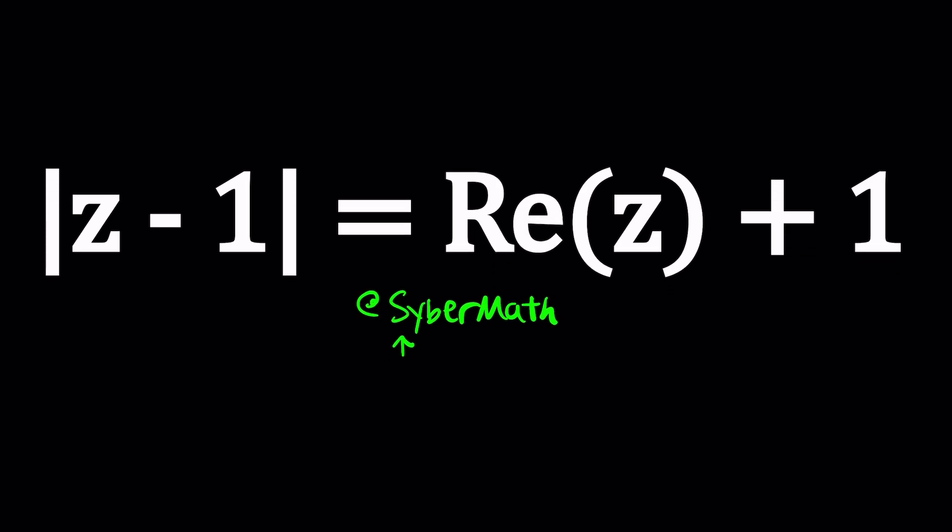Let's take a look at this problem. First of all, what do we have? On the left hand side, we have the absolute value of a complex number, which is z minus one. And on the right hand side, we have the real part of the same complex number, plus one. So real part of a complex number is what? Let's talk about it real quick.